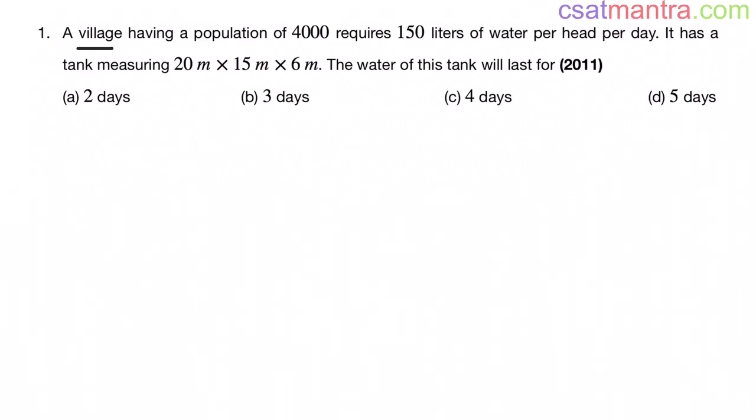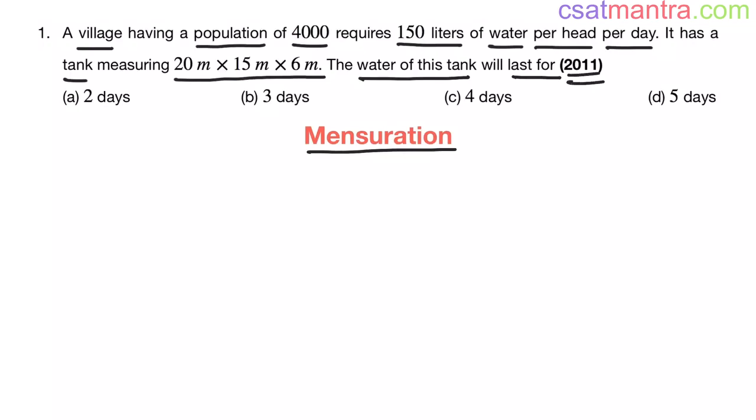A village having a population of 4000 requires 150 liters of water per head per day. It has a tank measuring 20 meters, 15 meters and 6 meters. The water of this tank will last for... This question is from mensuration chapter. It is asked in 2011.